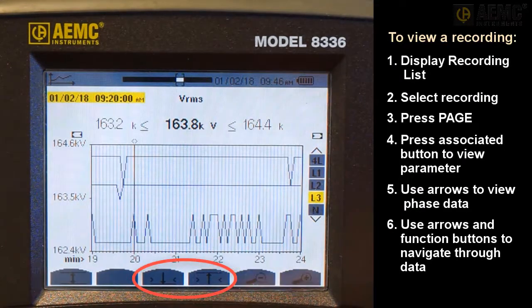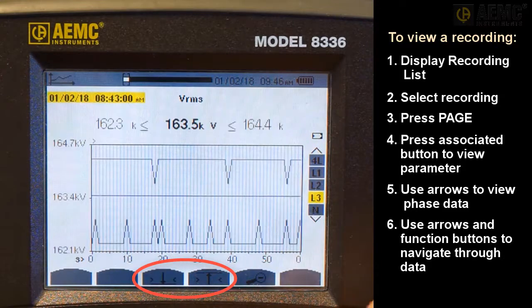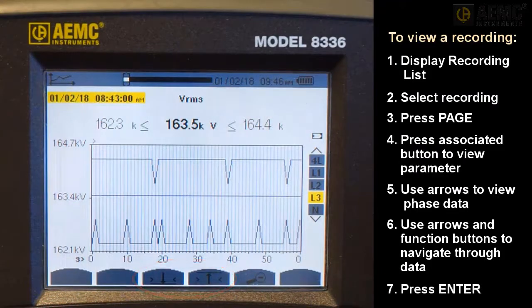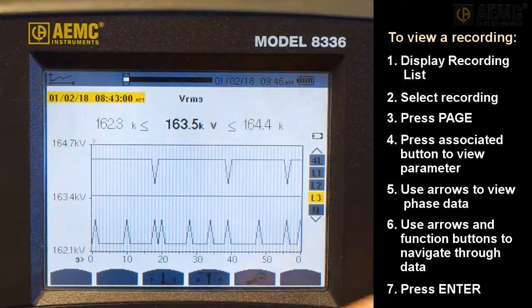Use the zoom in and zoom out buttons to view the graph in more detail. And for some parameters, the Min and Max Function buttons allow you to quickly navigate to the first occurrence of the minimum and maximum value, respectively. When finished, press Enter to return to the previous page.